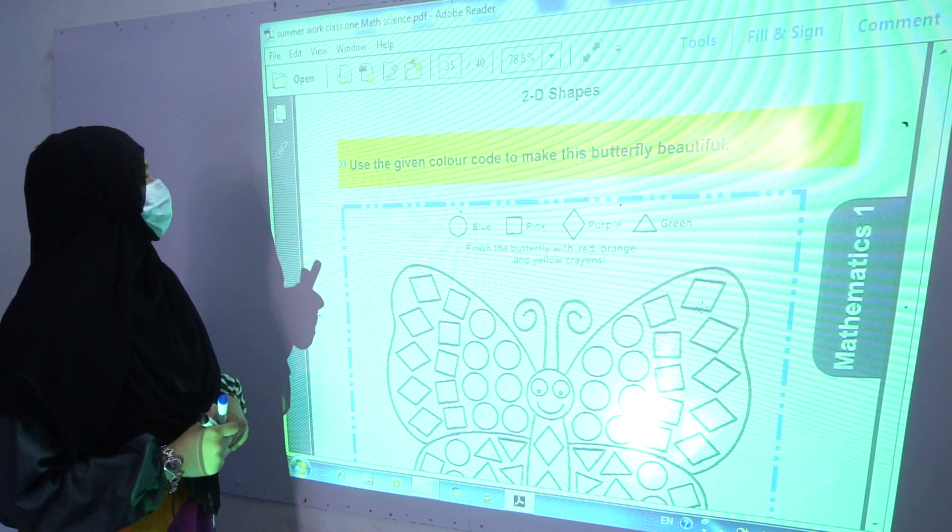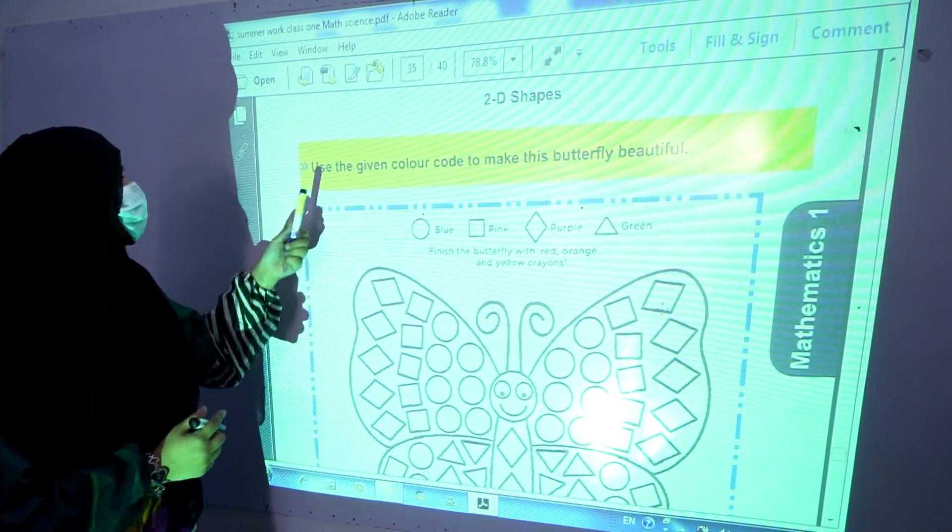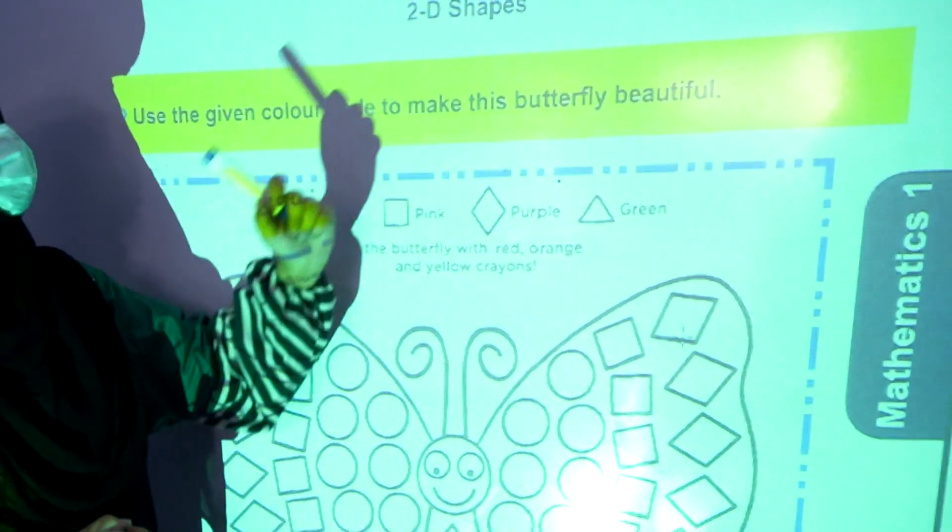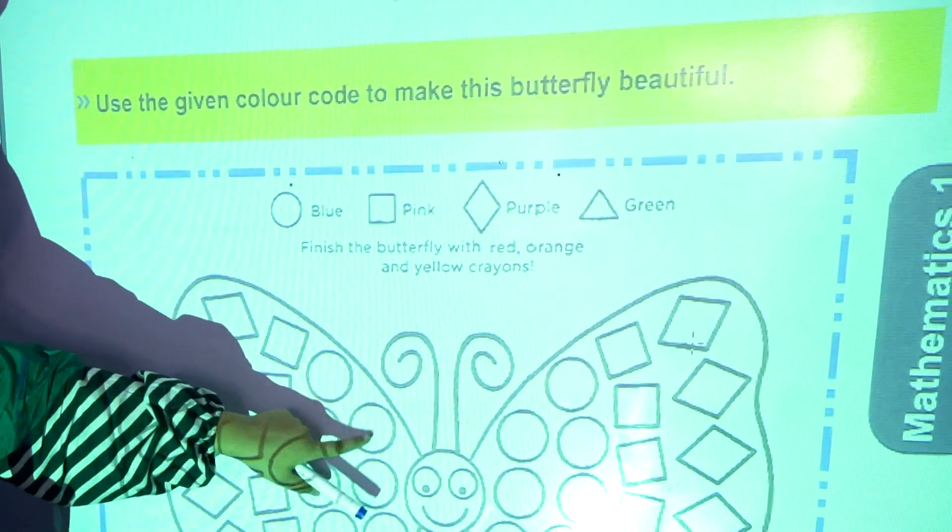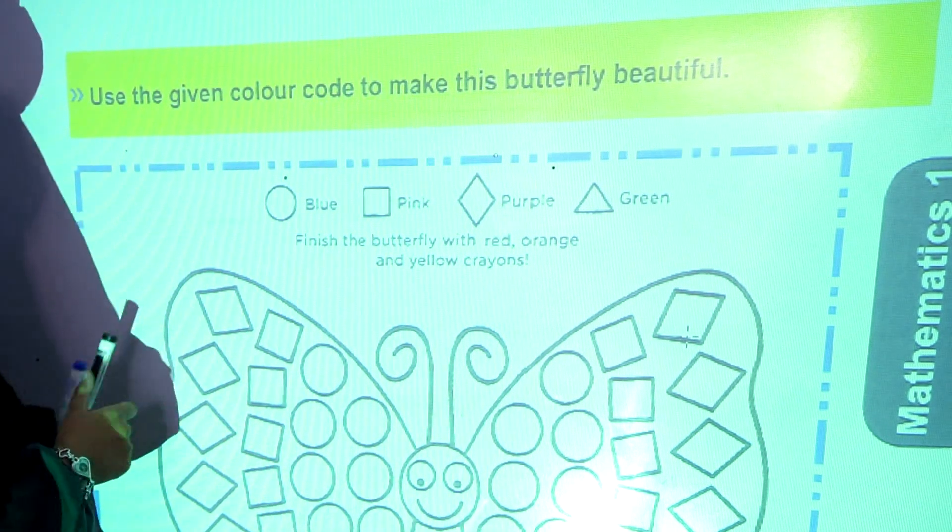Now next activity which is about 2D shapes. Use the given color code to make this butterfly beautiful. For example, circles, you have to color them blue. You have to color all circles blue.